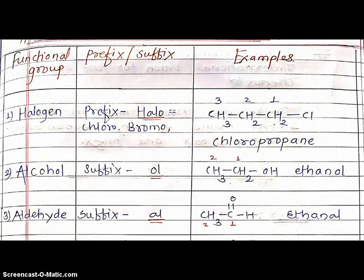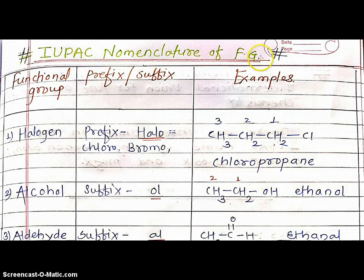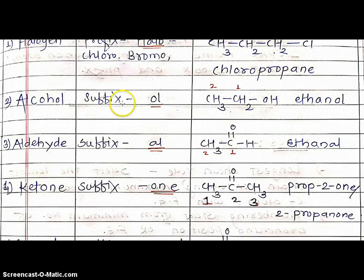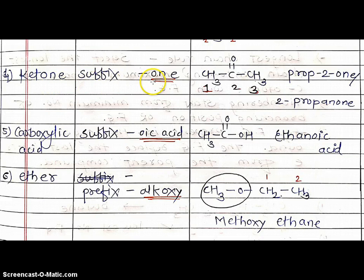IUPAC nomenclature of alkanes and functional groups — let us now revise. International Union for Pure and Applied Chemistry nomenclature of functional groups: Halogen — add prefix halo, chloro/bromo/iodo — example: chloropropane. Alcohol — add suffix -ol, CH3CH2OH — ethanol. Aldehyde — add suffix -al, CH3C=O — ethanal. Ketone — add suffix -one, three carbons, one-two-three propane; name of compound is propan-2-one or 2-propanone.